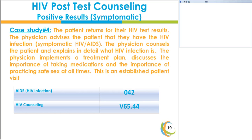Case Study 4: HIV post-test counseling with symptomatic or confirmed HIV infection results. The patient presents for results and the physician advises them they have the HIV infection. The physician counsels the patient, explains the HIV infection in detail, discusses the treatment plan, the importance of taking medications, and the importance of practicing safe sex. Because this is a confirmed diagnosis of AIDS, code 042 is sequenced as the principal diagnosis, and the counseling code V65.44 is the secondary diagnosis. You can also report V69.2, but it is not necessary and won't impact reimbursement.